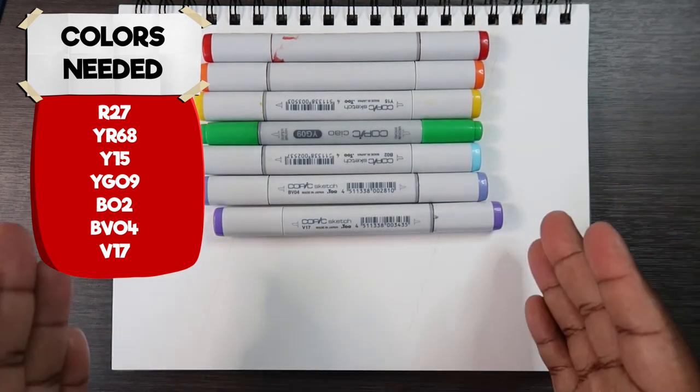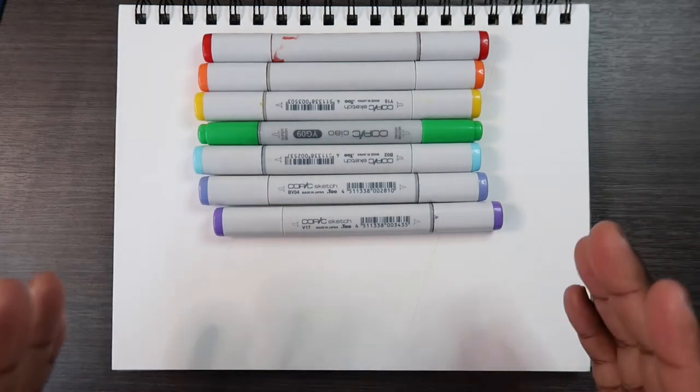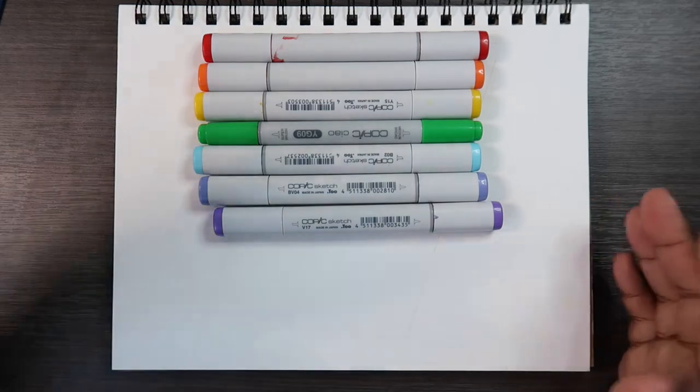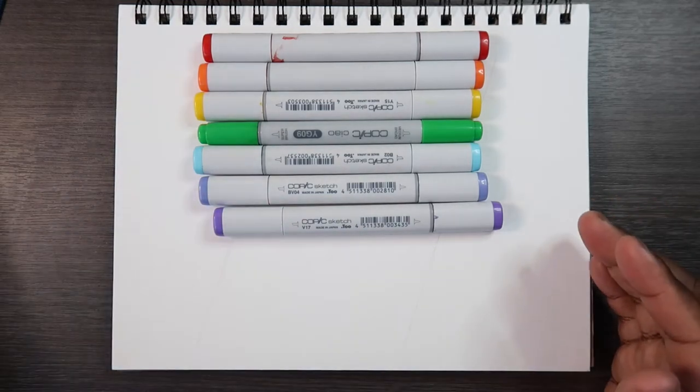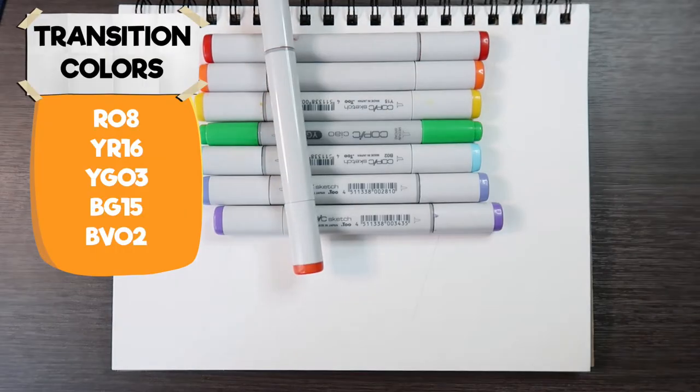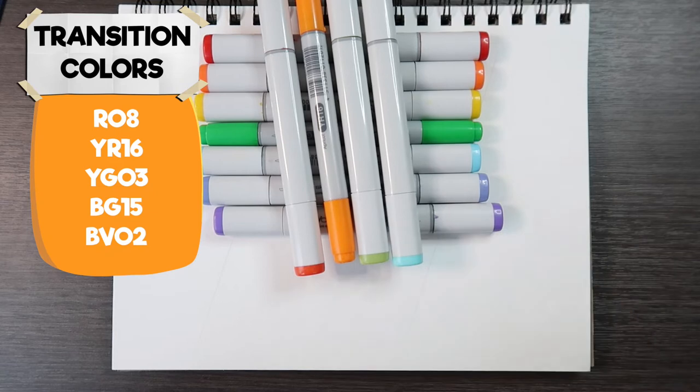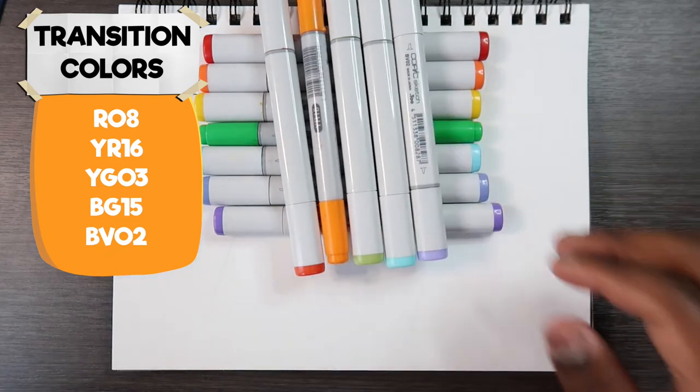Now these are going to actually be the colors of the rainbow but since these are all different hues they're going to be a bit difficult to blend into each other. That's why I have transition colors that I can use to help me. Those transition colors are R08, YR16, YG03, BG15, and BV02.